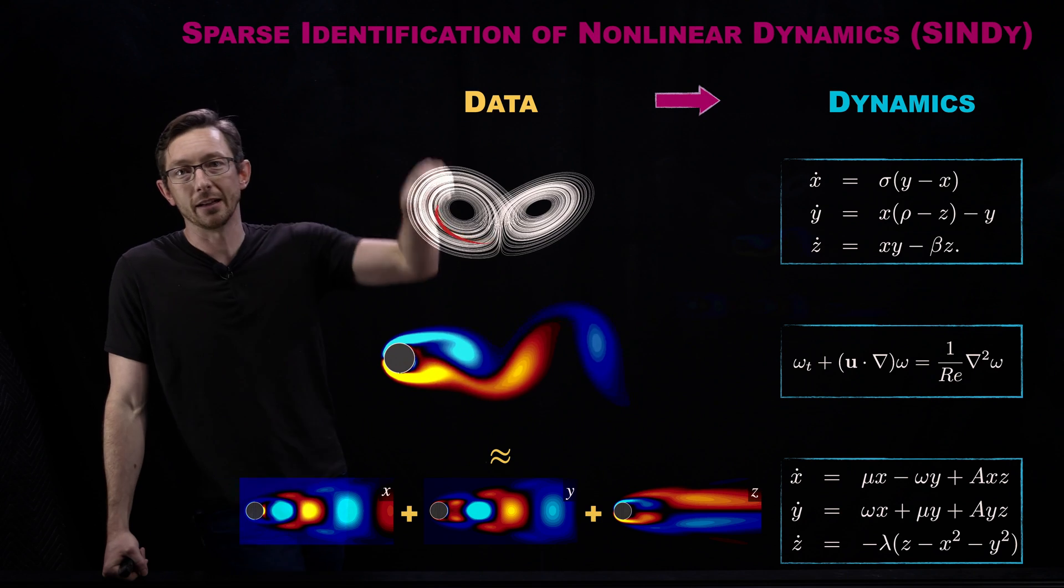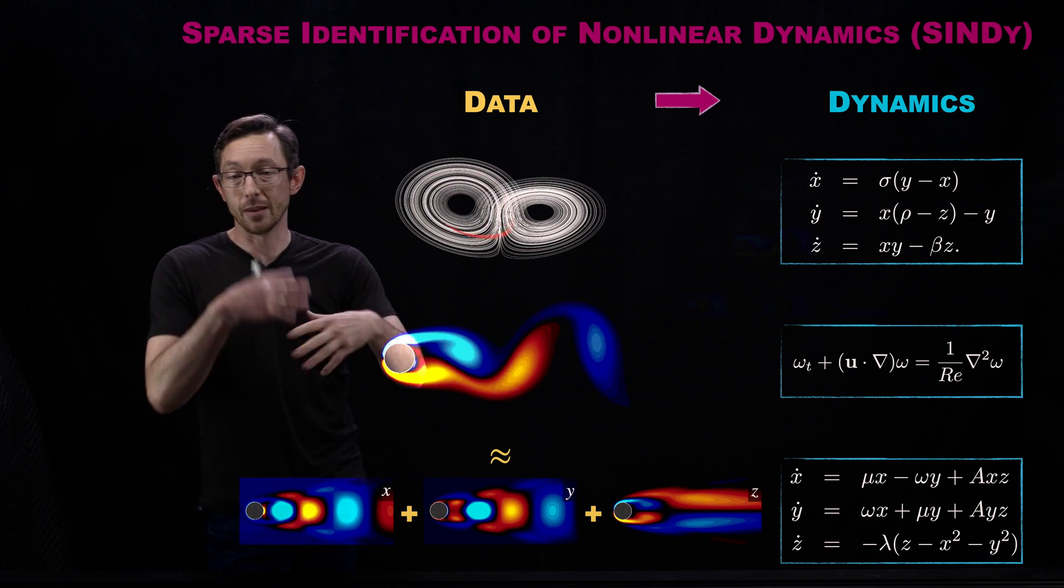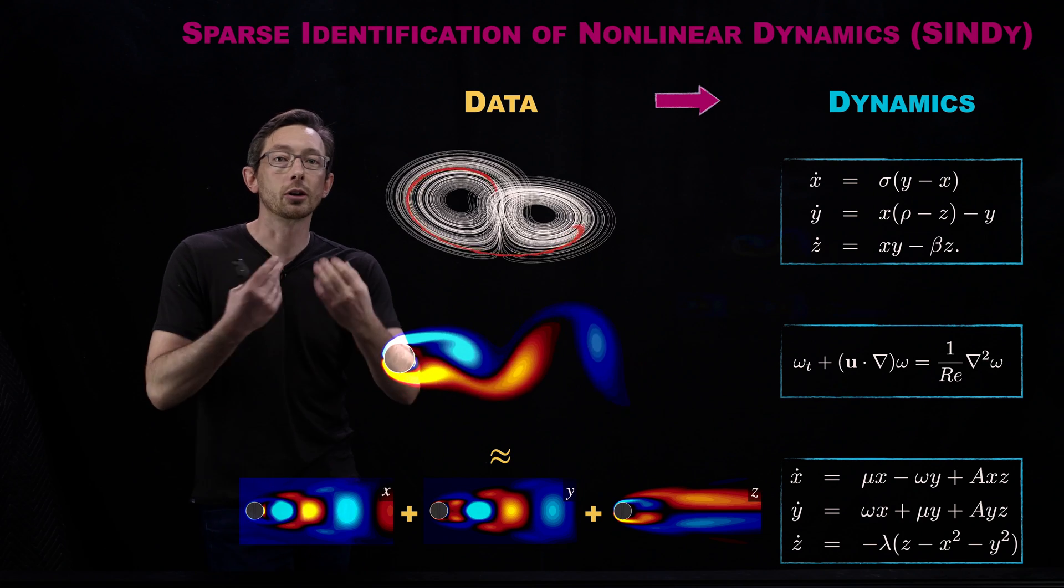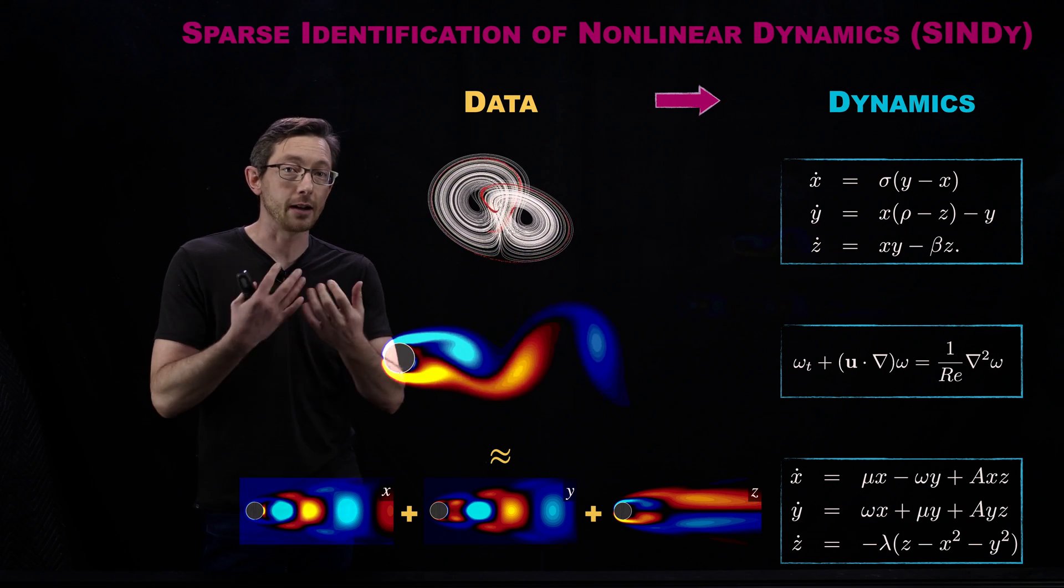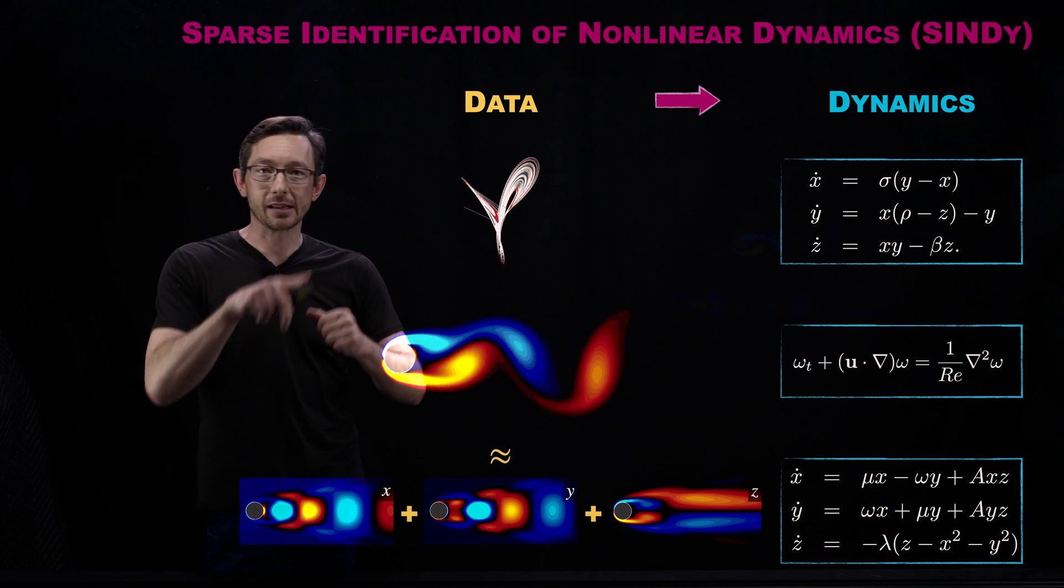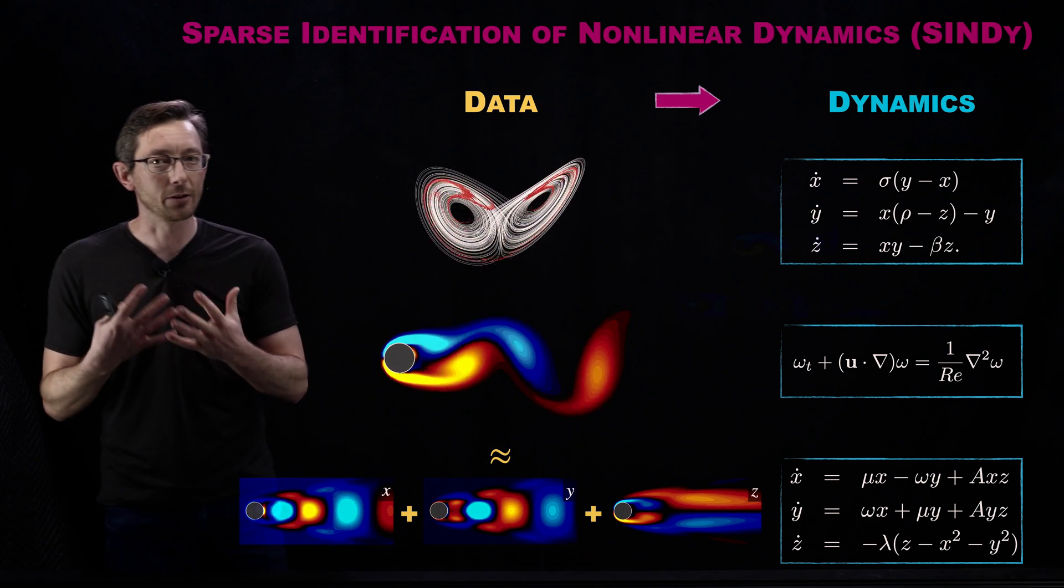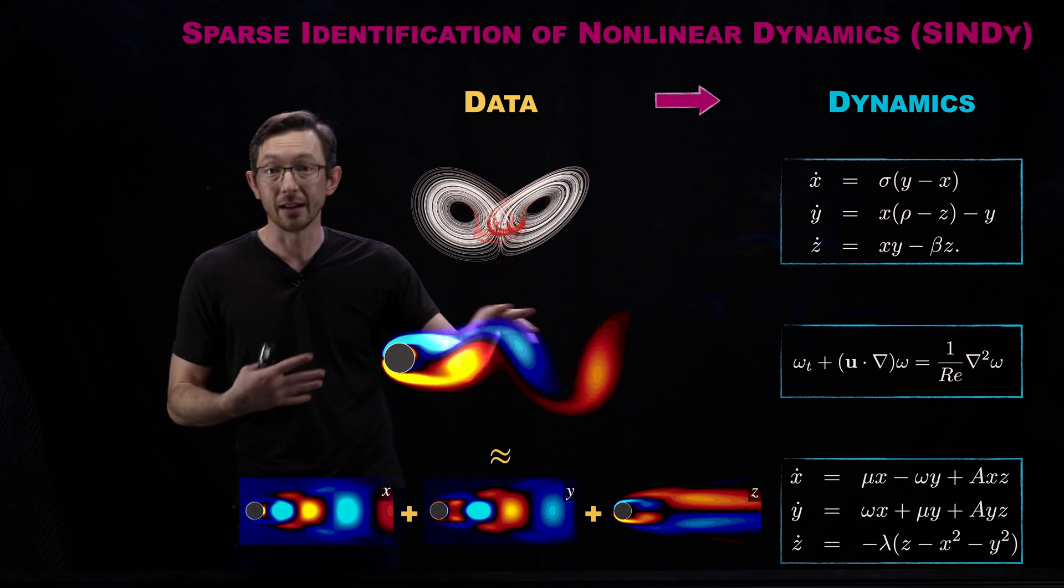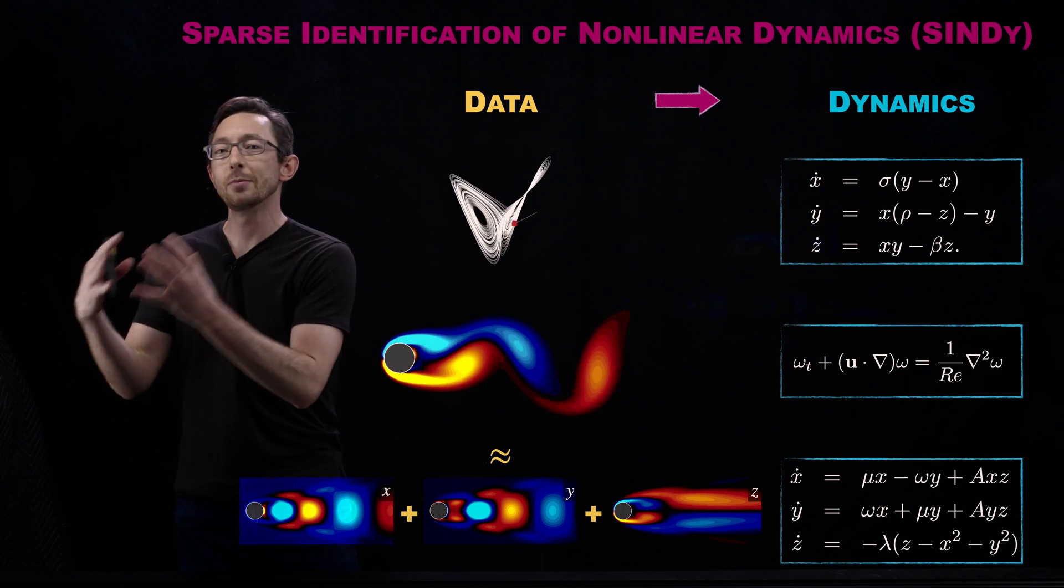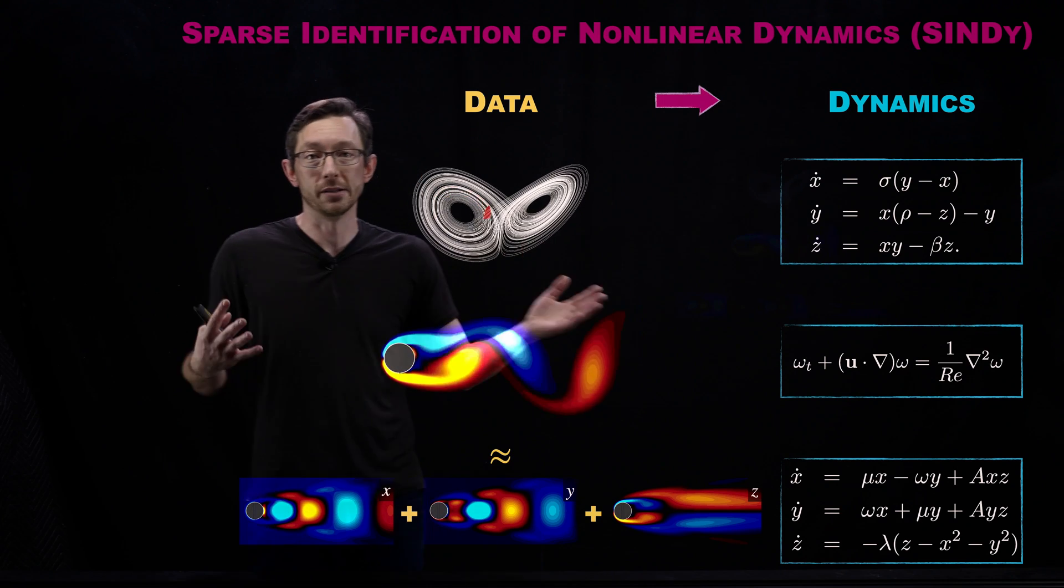Imagine if you had the planetary motion, you had tables or data from the motion of the planets. Could you learn Kepler's law? Could you learn f equals ma? Could you learn the correction, Einstein's correction, because of the discrepancies in the transit of Mercury? These are the kinds of questions we can answer with data and machine learning now.